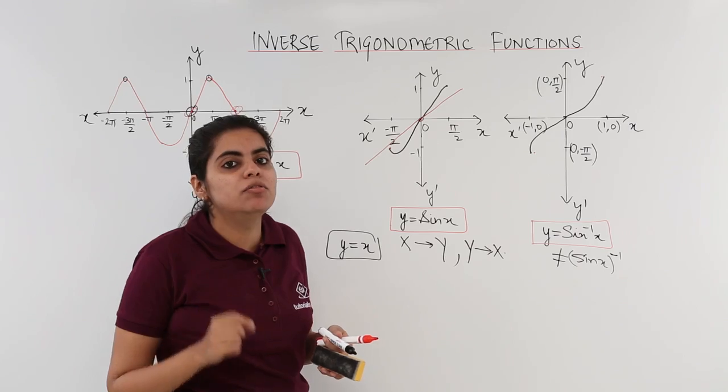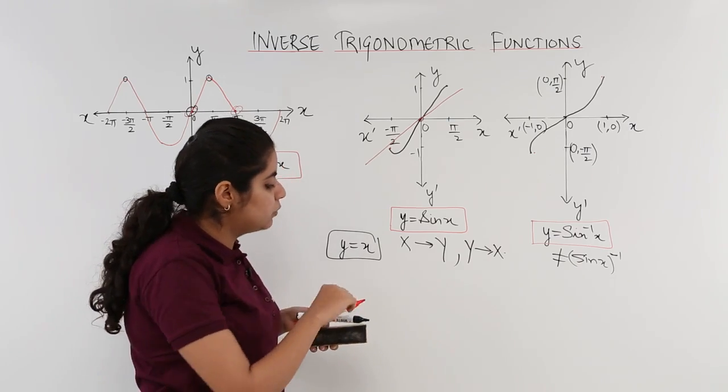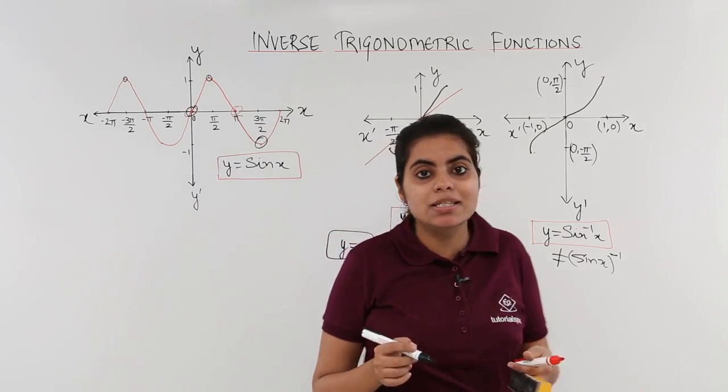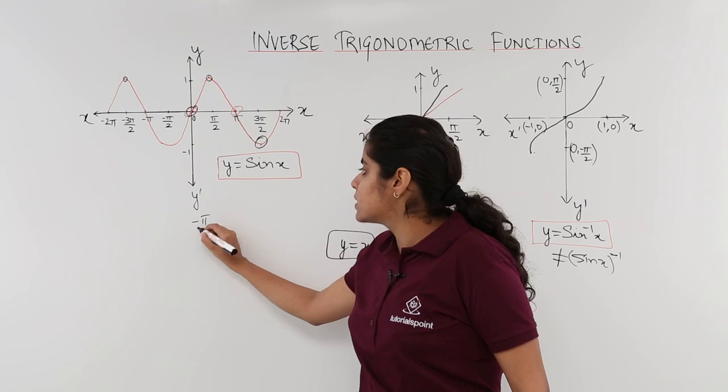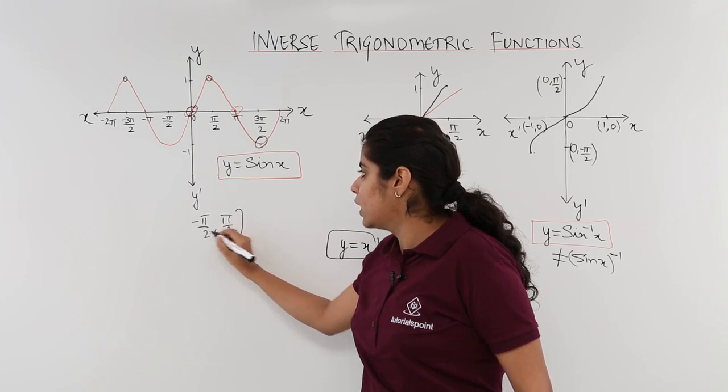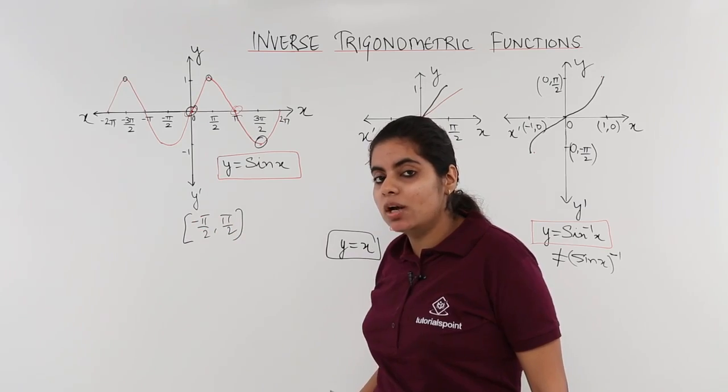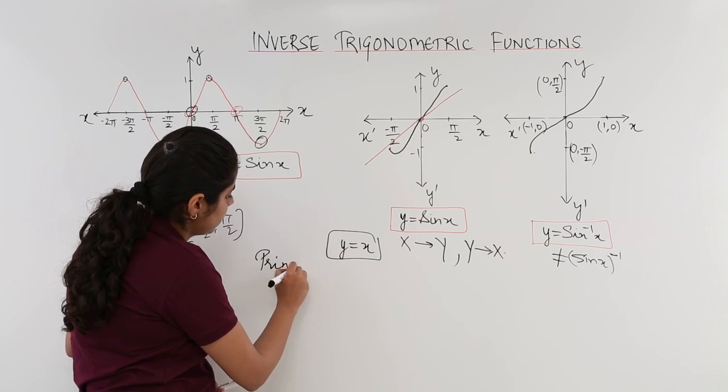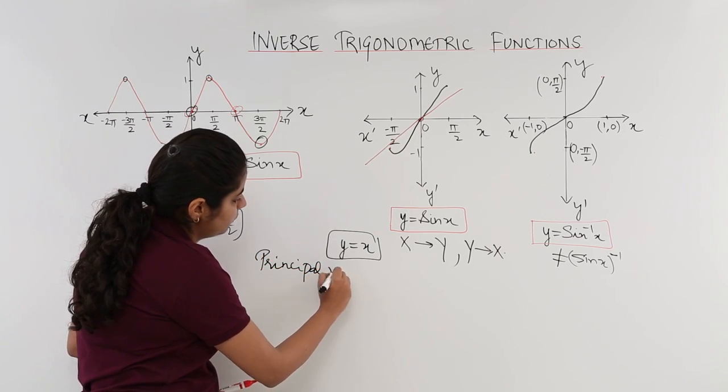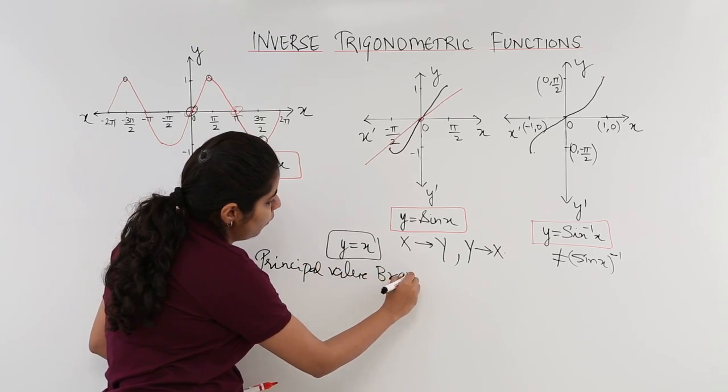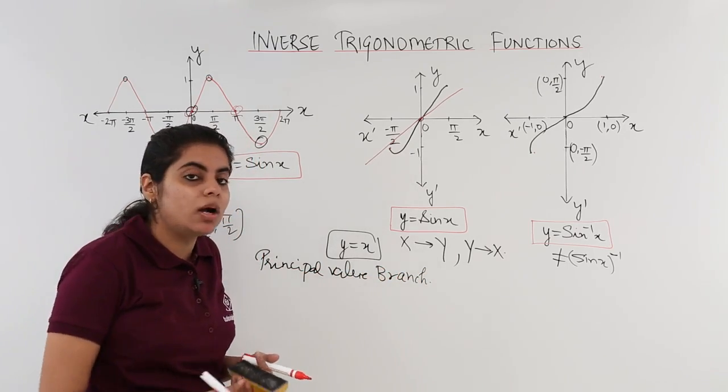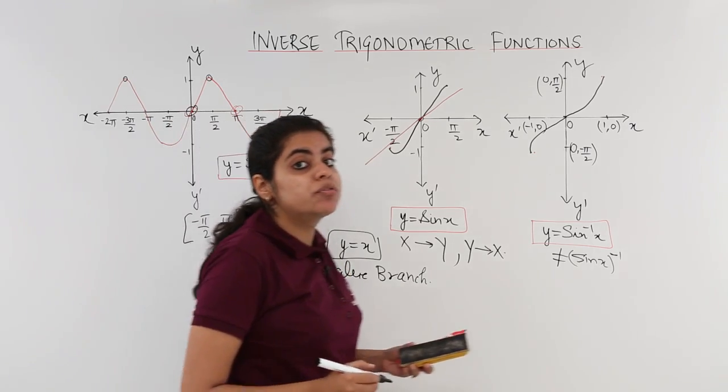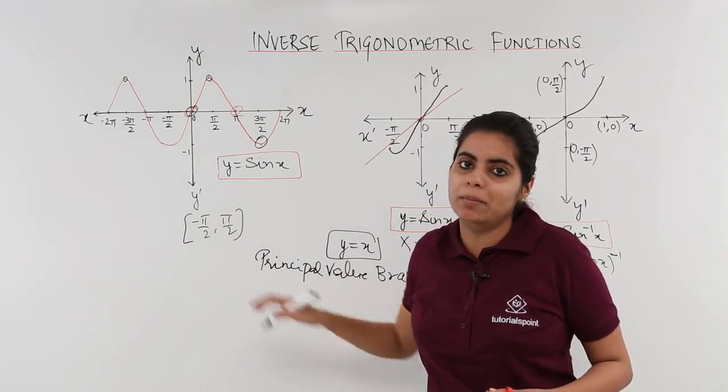Let me write the word for you people. It is what? It is a principal value branch. Which branch is called as the principal value branch? Which is -π/2 to π/2. This branch is called as the principal value branch. Let's write the spelling here. It is the principal value branch. Principal value branch is what? It is the branch of a trigonometric function from -π/2 to π/2.